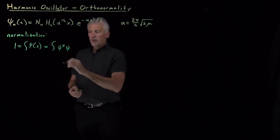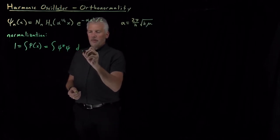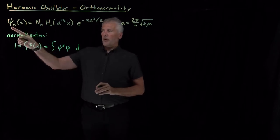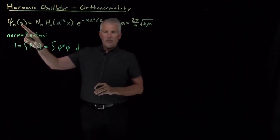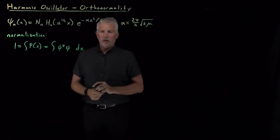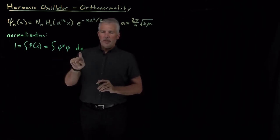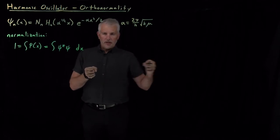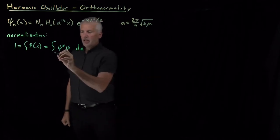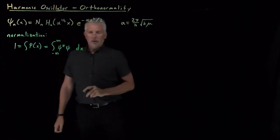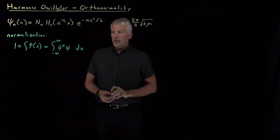It's worth doing one example just to make sure we know what variable we're integrating over. Because this wave function is a one-dimensional function that depends on x, the variable we integrate over is x. Remembering what that variable means — it's a bond displacement, how much I've stretched the bond or how much I've compressed the bond.